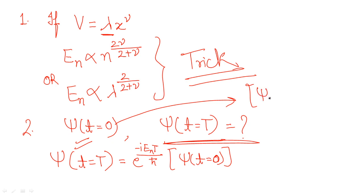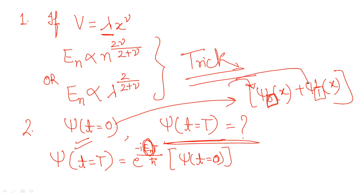If the wave function at t=0 is given as a superposition of two states — for example ψ₀(x) and ψ₁(x), corresponding to n=0 and n=1 — you must use the corresponding state energy for each term when multiplying. It is not the same energy for every state; it depends on the particular n value of that term. Once you work through practice questions, this will become clear.